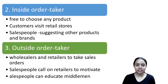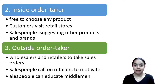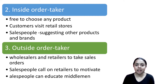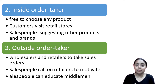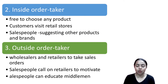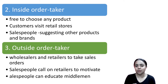The third type is the outside order taker. They work with middlemen — wholesalers and retailers in large companies. They communicate with the middleman, educate them, and act as a salesperson. For example, a retail shop salesperson motivates the middleman to sell products.